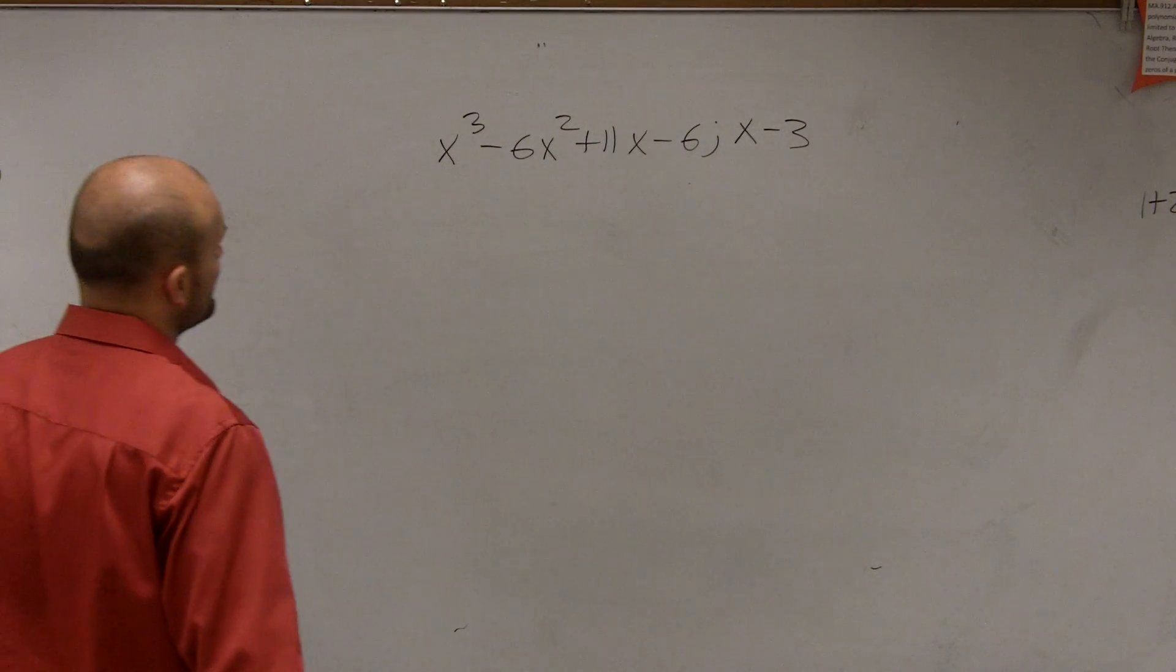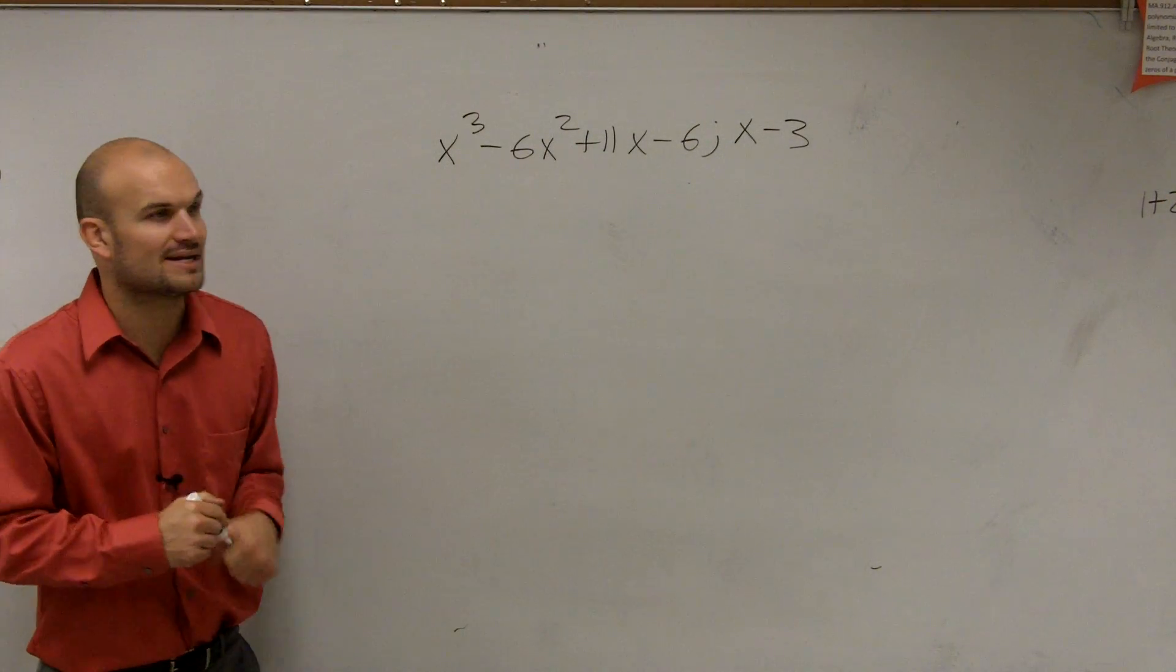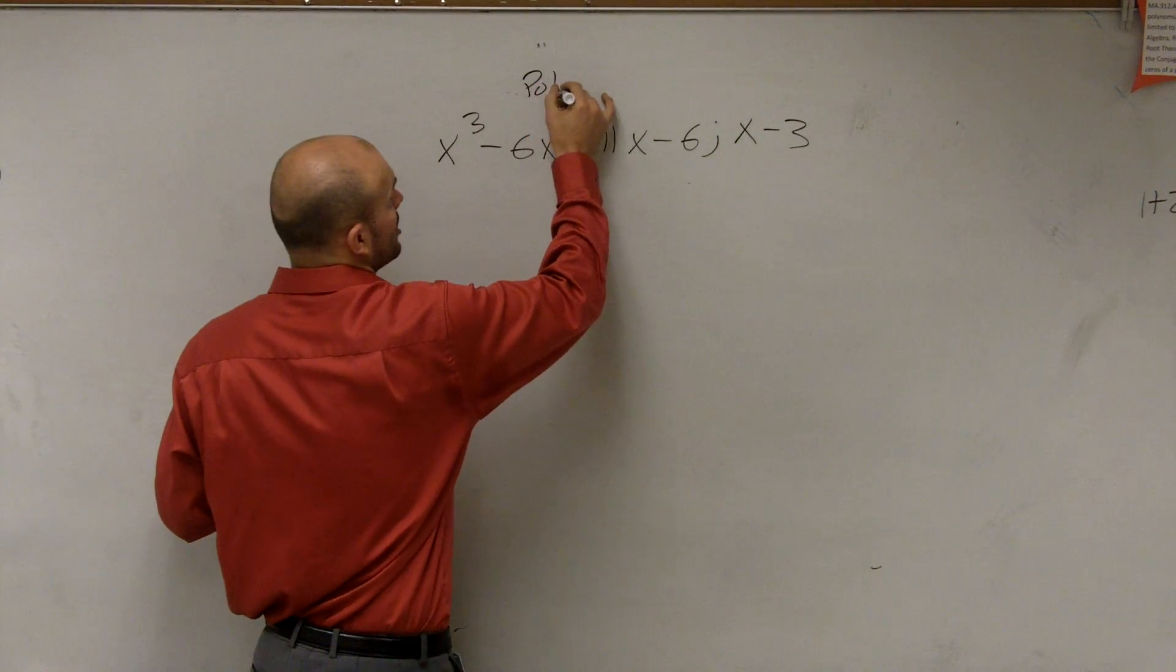So for this problem, it says I'm given a polynomial: x³ - 6x² + 11x - 6. That is our polynomial.